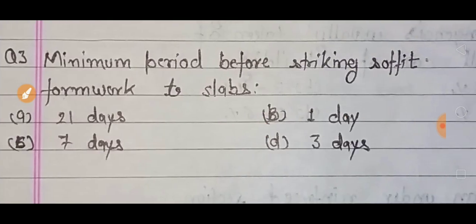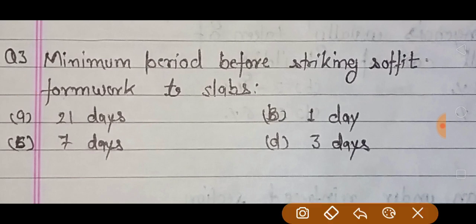Our next question: minimum period before striking soffit formwork to slabs. छत का जो formwork होता है, soffit का, वो हटाने के लिए minimum कितने days का होता है? तो minimum होता है 3 days.